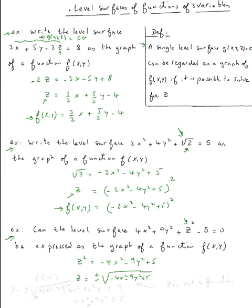We get two values, so this is not a function. z = ± [something] is a relation, not a function. This expression is not the expression of a function.